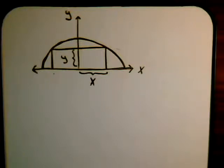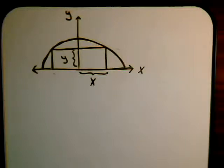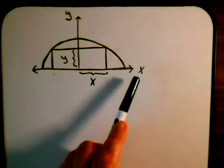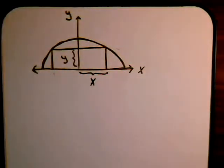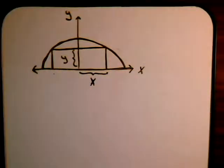This is our second video involving an optimization problem, a maximum-minimum problem, where we have a constraint condition involved. Here we have a rectangle inscribed inside of a circle — we're just considering the front part of the circle, or the semicircle. And we want to know what dimensions should the rectangle have so it takes up the maximum amount of area.